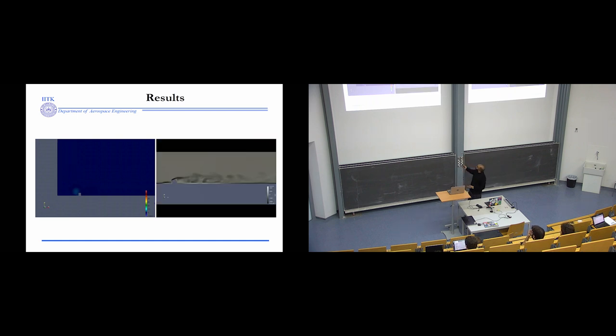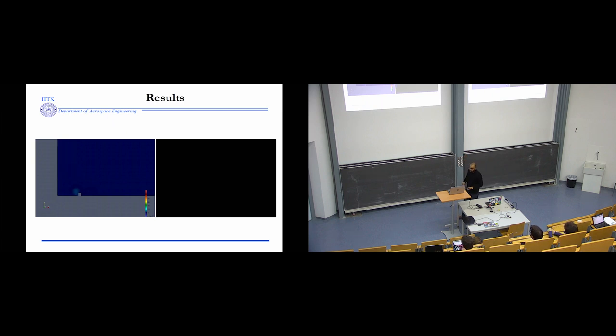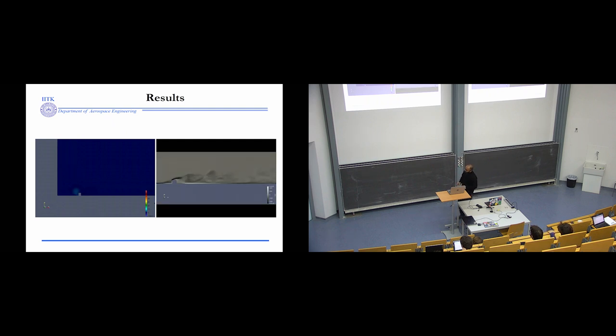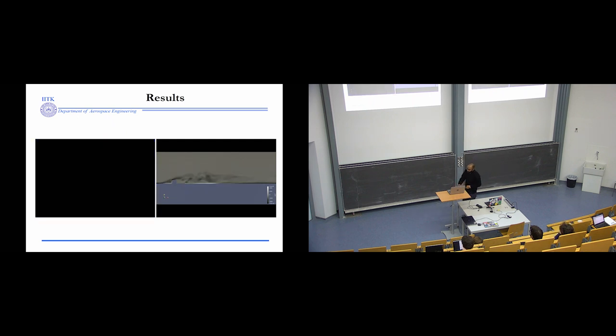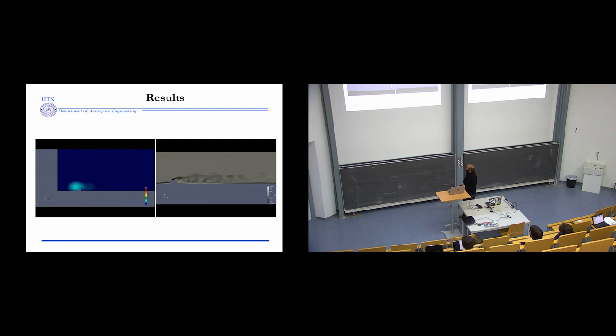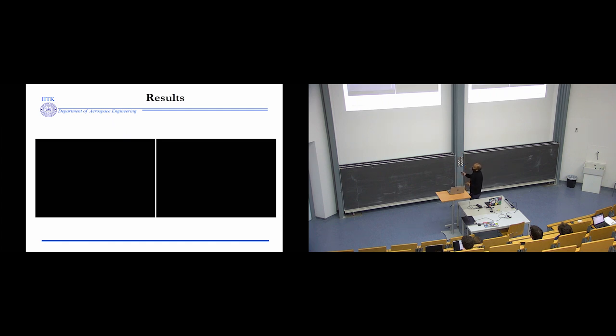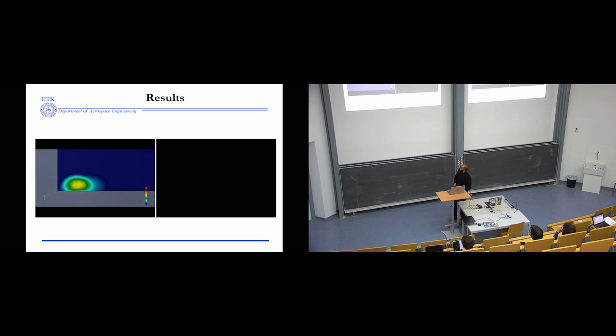This is a flow over a square obstacle, and this is the vorticity magnitude. Vorticity is the prominent variable which generates the lamb vector and which generates the noise. This was done in OpenFOAM. By passing these values, we generate certain acoustic values, which we can see here. This simulation was done for a serial case.